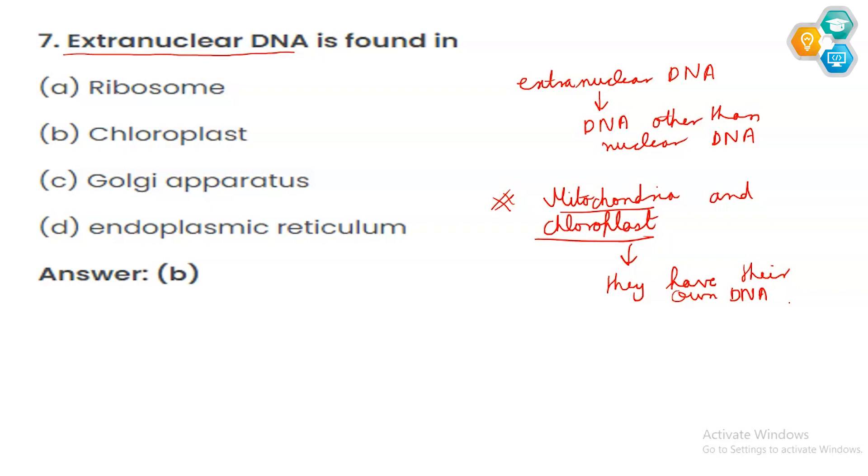Now, in the options, we have not been given mitochondria. So our correct option is option number B, which is chloroplast.